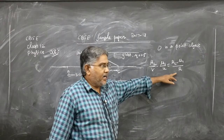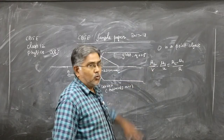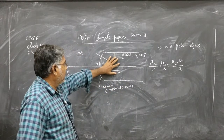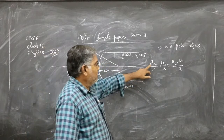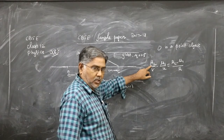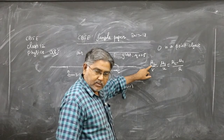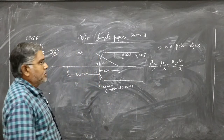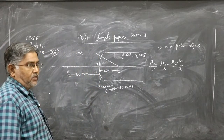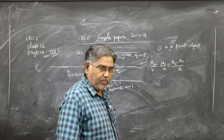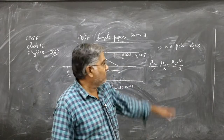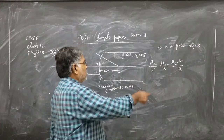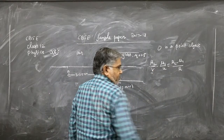Here, v is the image distance, u is the object distance, R is the radius of curvature, μ₂ is the refractive index of the second medium with respect to air, and μ₁ is the refractive index of the first medium with respect to air. The first medium is air itself, so μ₁ = 1. μ₂ is given as 1.5. We need to find v.